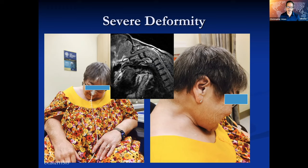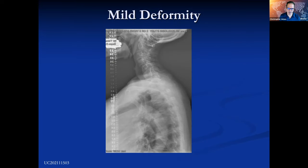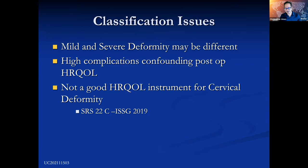What are some of the problems with cervical deformity classification? One is that what's important to a patient with severe deformity in terms of their HR-QOL — which a lot of this classification work is built on — is very different from a patient with mild deformity. What's important to them, like chin-brow vertical angle and function, is totally different from someone with low-grade deformity who may have more arthritic pain.